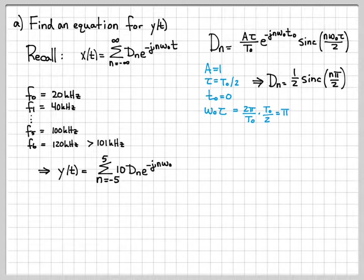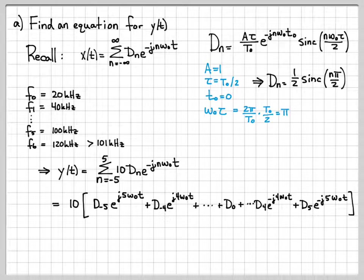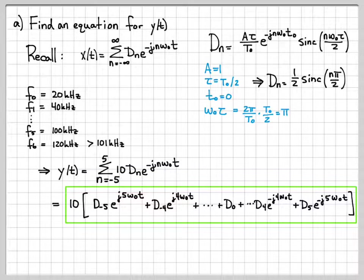So taking that into account, we can actually just close form now, write down an expression for y of t. y of t is also going to be this representation. But we know that all the terms above 5 and below minus 5 get completely rejected. And all the terms in the summation from minus 5 to 5 get multiplied by 10. So if we wanted to, we could actually just write out this sum. It's going to have a total of 11 terms now. Here's what this sum is. We know what omega naught is. We know what these d's are based on this equation. So this right here is an equation for y of t. It's a time domain equation for y of t.